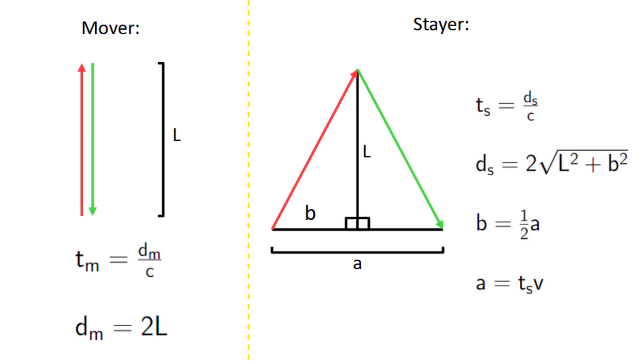Now with these six equations, we need to find a formula that expresses tm in terms of ts, v, and c, and nothing else. If you want, feel free to pause and try it on your own. But if not, here we go. So first of all,